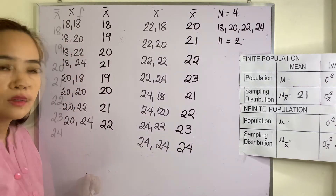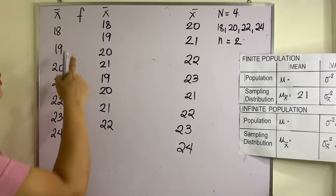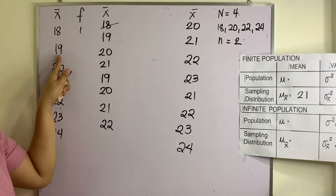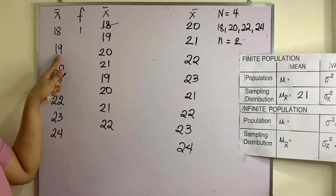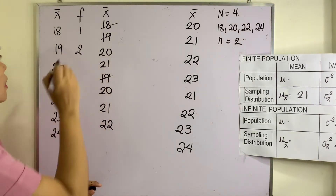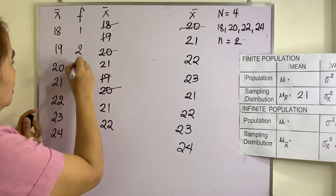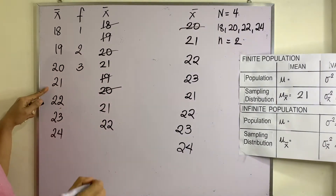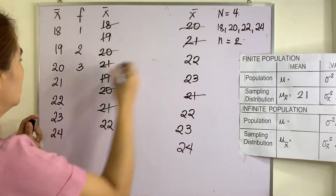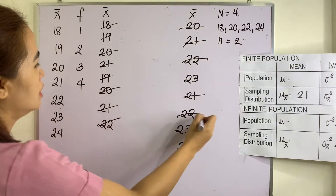The next step is to get the frequency of each sample mean. We have 18: frequency 1. We have 19: 1, 2 — frequency 2, then 3. We have 20: 1, 2, 3.